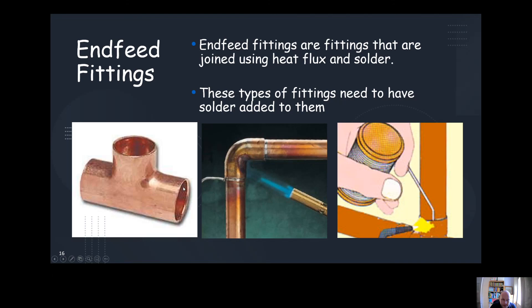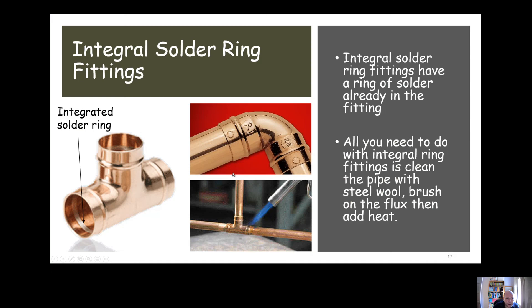End feed fittings are jointed using the process we've just looked at, but you'd need to add solder to them. Integral solder ring fittings, as you can see in the picture on the left hand side here, have a ring of solder integrated into them already. We can see with this raised bit here where the solder's been integrated. With integral solder ring fittings, you'd clean up the pipe, clean up the fitting, put the flux on, add heat, and then the solder would come out when it reaches the melting point.